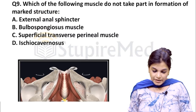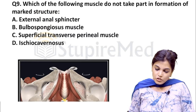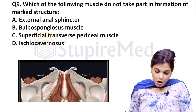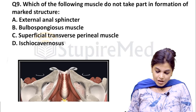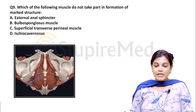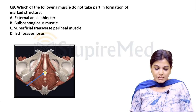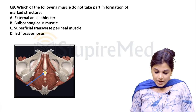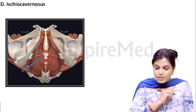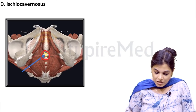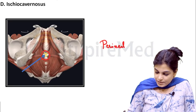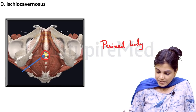Next question: which of the following muscles does not take part in the formation of the marked structure? Option A is external anal sphincter, option B is bulbospongiosus muscle, option C is superficial transverse perineal muscle, and option D is ischiocavernosus. The yellow marked structure in this image is the perineal body.